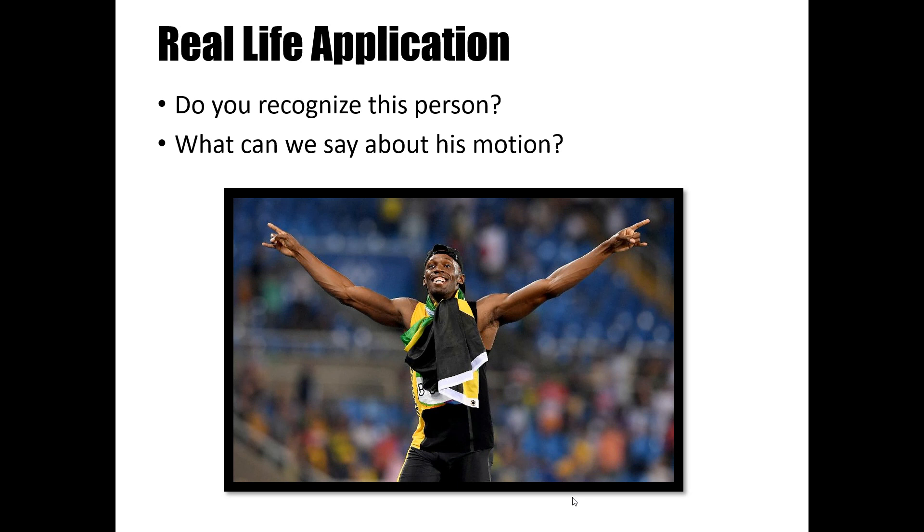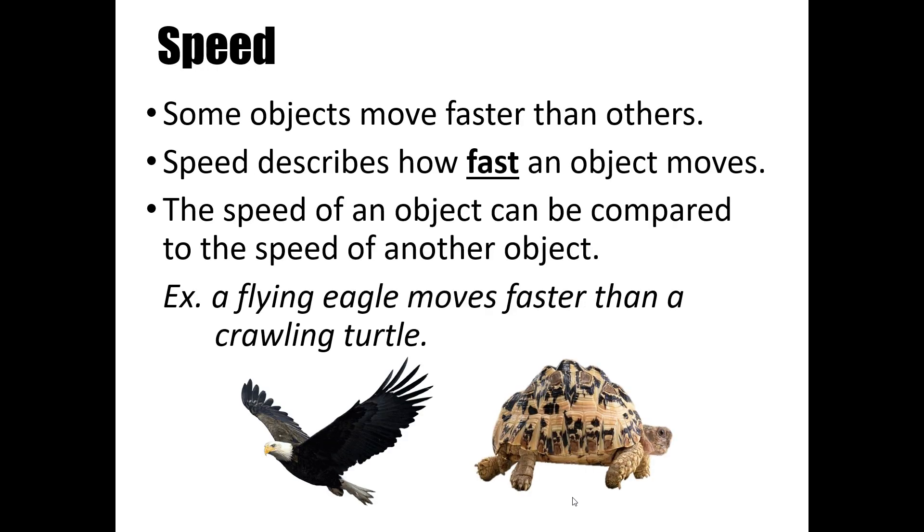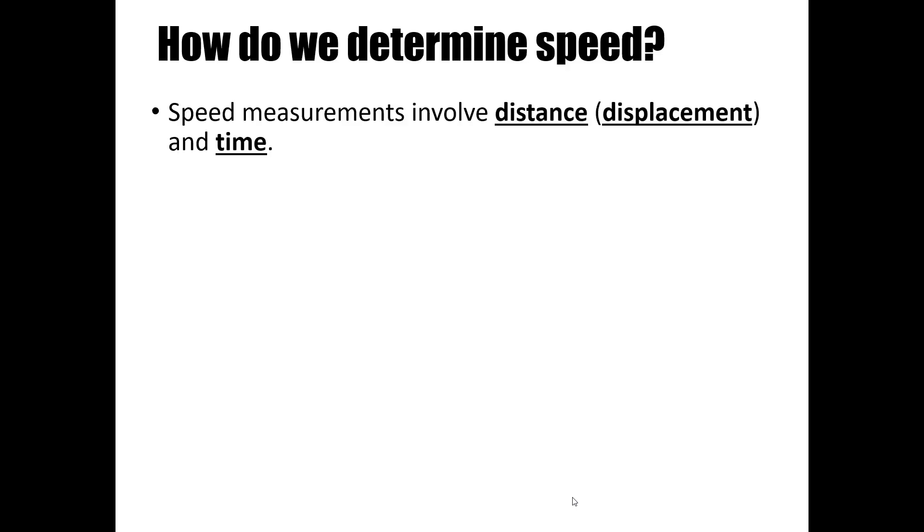So definitely, Usain Bolt is super fast. And what we can do is we can compare the speed of one object to another object. So if I'm talking about the last Olympics where Usain Bolt beat his competitor Tyson Gay, who was the favored runner, we could say Usain Bolt is faster than his competitors or Usain Bolt is faster than Tyson Gay. So we can explain an object's speed by comparing it to another object, such as in this example, because speed is how fast an object moves. So we can describe a qualitative measure for speed where we compare two objects, or we can find a more quantitative measurement for speed, which is something that you're going to be doing towards the end of this lesson.